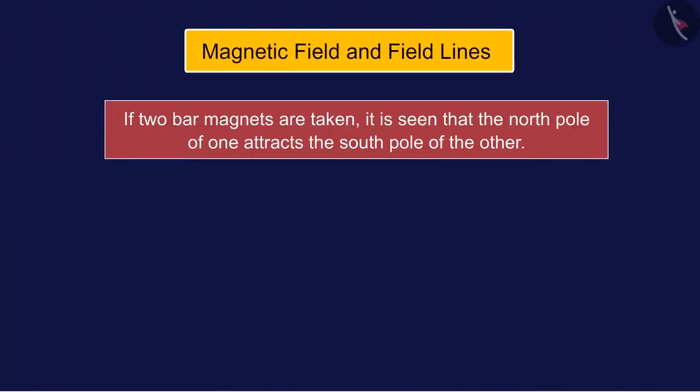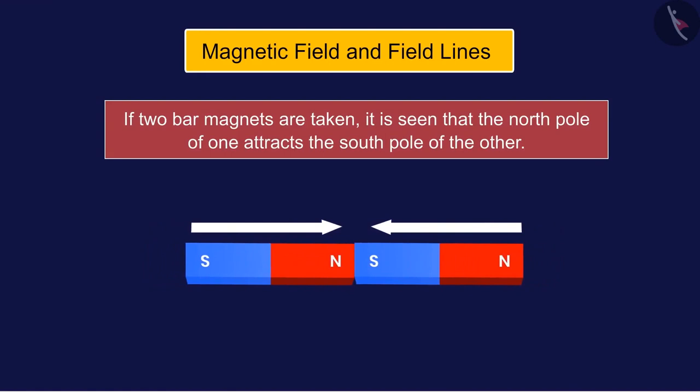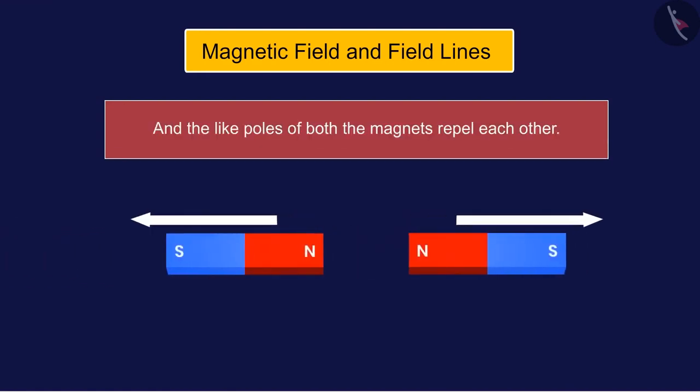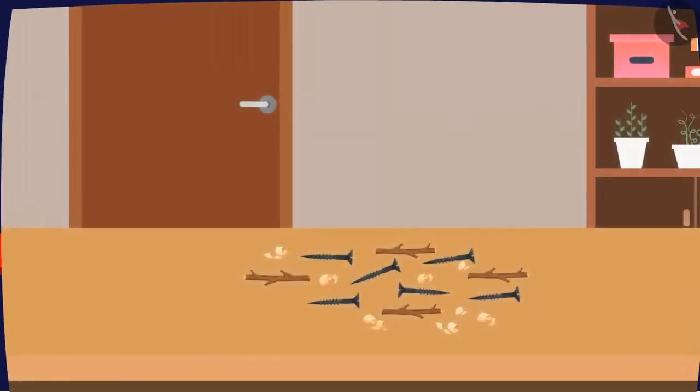Magnetic field and field lines: if two bar magnets are taken, it is seen that the north pole of one attracts the south pole of the other, and the like poles of both the magnets repel each other.